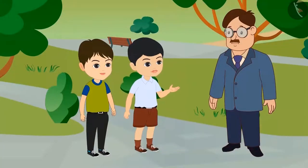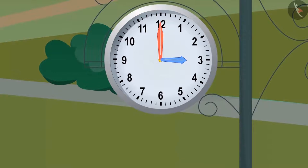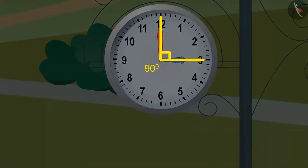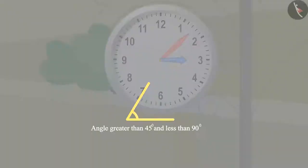I will try, uncle. The angle of 90 degrees is made at 3 o'clock and the angle of 45 degrees is half of this angle. That means the angle of 45 degrees is formed approximately between 5 minutes past 3 and 10 minutes past 3. That means the angle greater than 45 degrees and less than 90 degrees is formed at 5 minutes past 3.